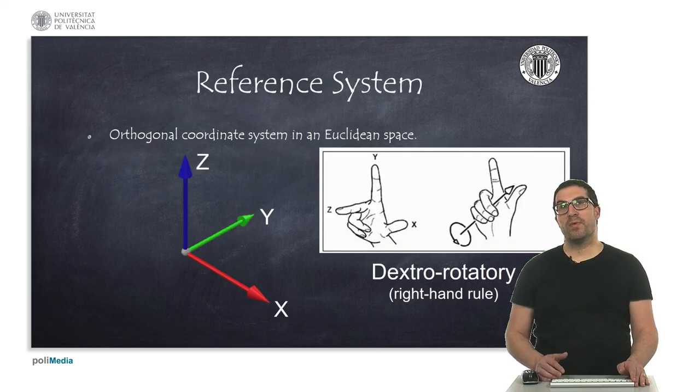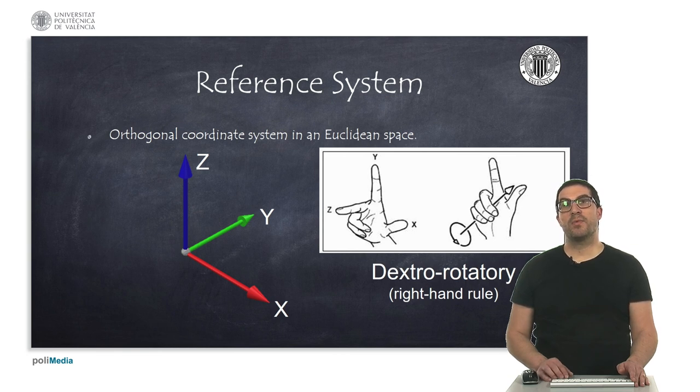A reference system, or frame, is an orthogonal coordinate system. In a 3D space, we have three axes: X, Y, and Z.